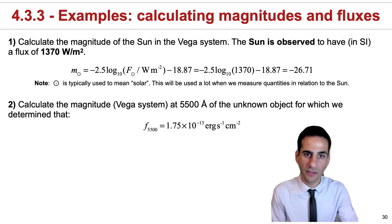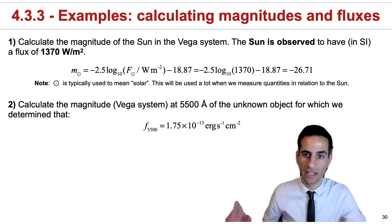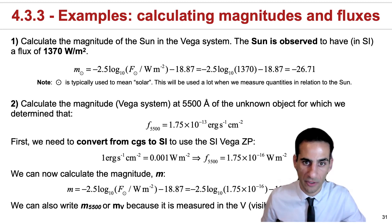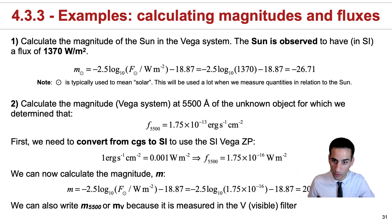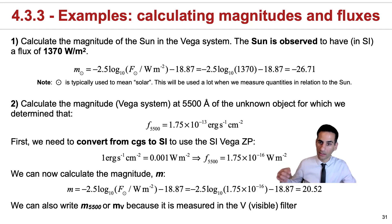Now the other thing we can do is, for example, determining the magnitude in the Vega system at a specific wavelength of the unknown object for which we already calculated the flux. So that was the object that had the rising flux density that we integrated. Say that we get this flux at that specific wavelength. The way that you would transform that into a magnitude in that specific band, because in Vega we use international system, first thing you do is you convert to watts per square meter. Then all you have to do is use the equation. You plug it in using that zero point, that value of minus 18.87. In this case, you would conclude that the magnitude of that source for which we took a spectrum would be 20.52.